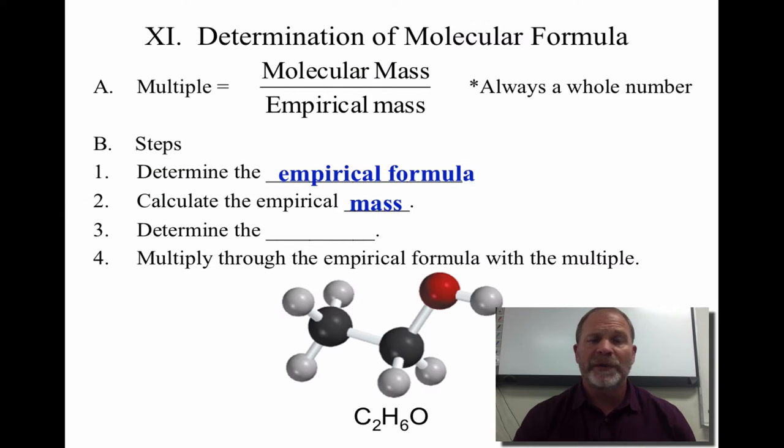So I calculated the empirical formula. I get its mass, and then I'm going to take the molecular mass, which I give you, divided by that, and then give me a whole number. Then I will just distribute that back through the actual equation.